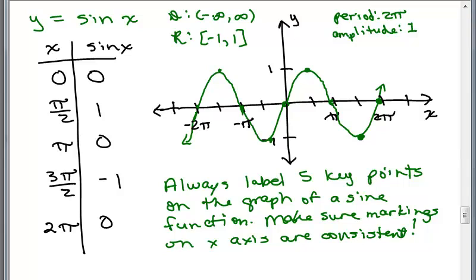The domain goes from negative infinity to infinity. There are no restrictions on the x variable. The range, the y value goes between negative 1 and 1. The period is 2 pi. So you have a full cycle between 0 and 2 pi, for instance. And the amplitude is 1.